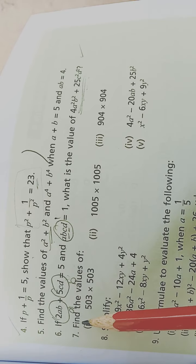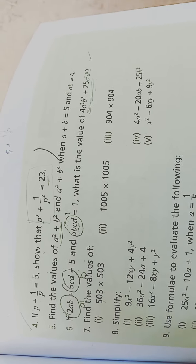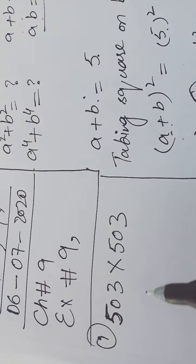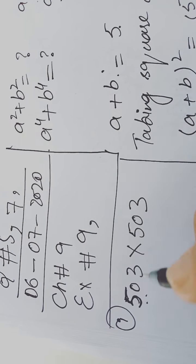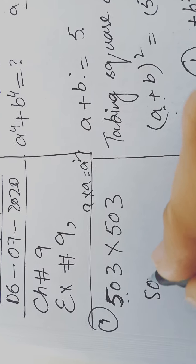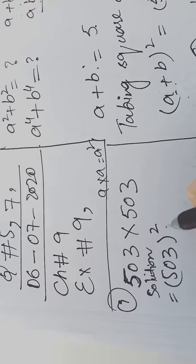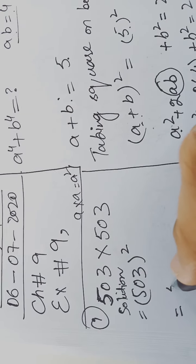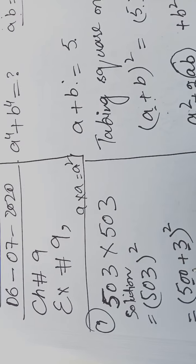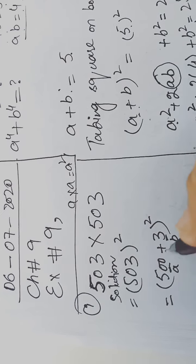Question 7: find the value of 503 × 503, which is the square of 503. We write it as 503². To apply the algebraic identity, we break it as (500 + 3)², where a = 500 and b = 3.